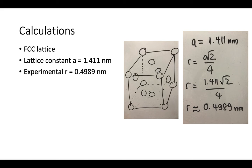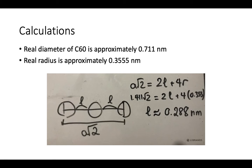For the calculations: because C60 molecules are usually packed into an FCC lattice, and from experiments the lattice constant is approximately 1.411 nanometers. From this I calculated that the radius of one C60 molecule ball is approximately 0.49 to 0.5 nanometers.